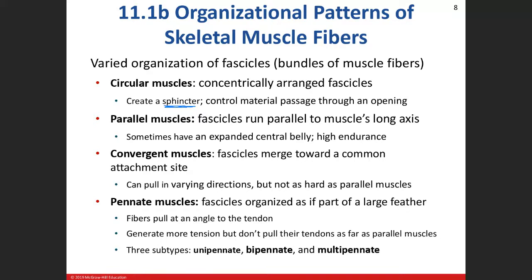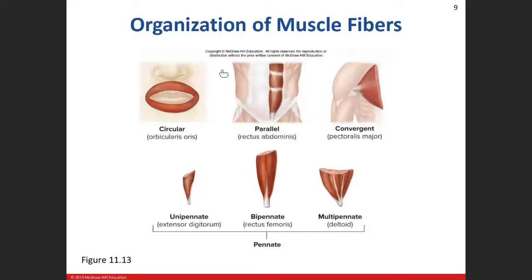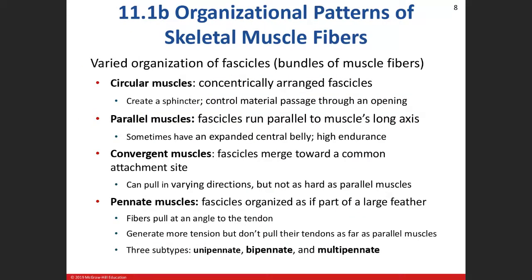The next type is parallel fibers — the example here is the rectus abdominis muscle. These fibers run parallel to one another, up and down. The nice thing about the parallel muscle fiber arrangement is that it gives a muscle more muscular endurance — not strength, but endurance. When the muscle contracts, the central belly, usually the center of the muscle, will start to expand — like when you flex your arm and see the bicep get big.